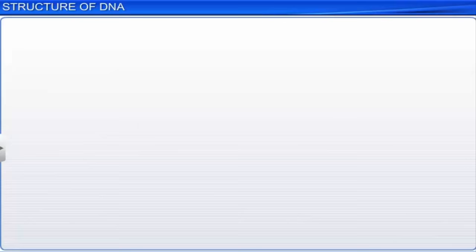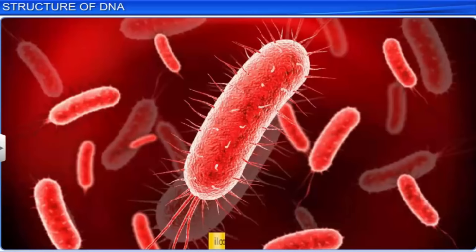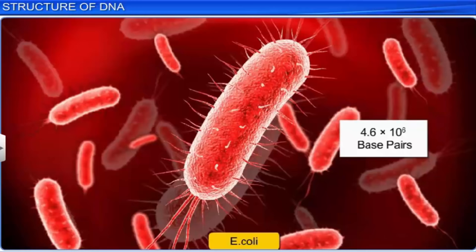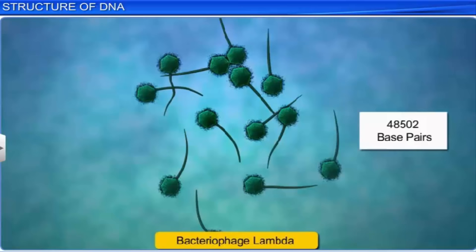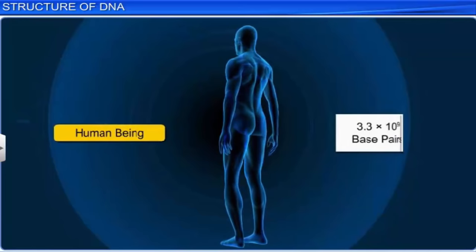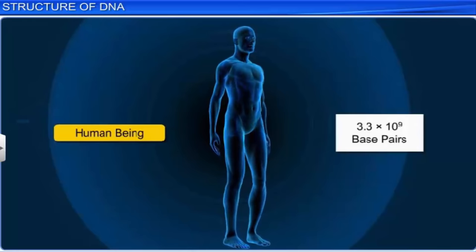A pair of nucleotides is also known as a base pair. For example, E. coli has 4.6 × 10⁶ base pairs, and bacteriophage lambda has 48,502 base pairs, while the haploid content of human DNA has 3.3 × 10⁹ base pairs.